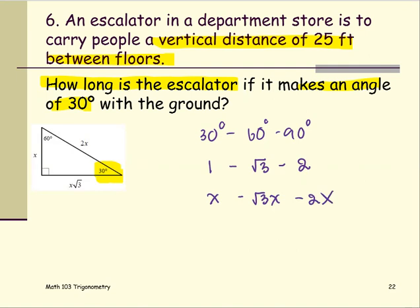In this situation, the vertical distance is given to be 25 feet, which is the value for the x. Therefore, if x is 25, the length of the escalator would be 2 times x or 2 times 25, which is 50. So the answer is 50 feet.